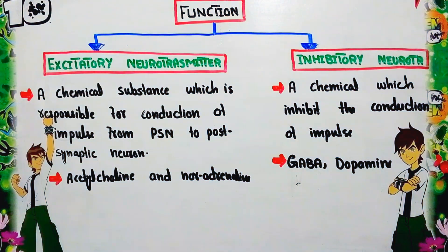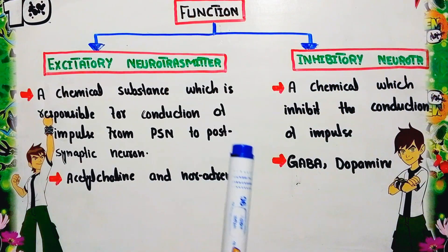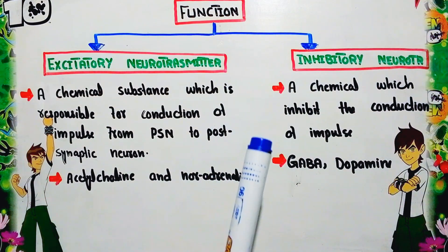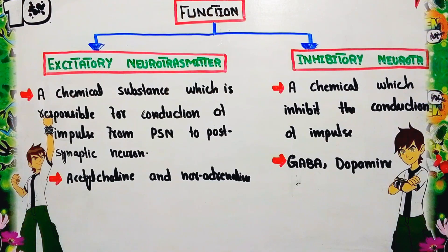Inhibitory neurotransmitters, as the name indicates, inhibit or do not transmit the nerve impulse from the presynaptic neuron to the postsynaptic neuron. These are chemical substances which inhibit the conduction of impulse from presynaptic to postsynaptic neuron. Examples include GABA (gamma-aminobutyric acid) and dopamine. That is all about neurotransmitters — thank you.